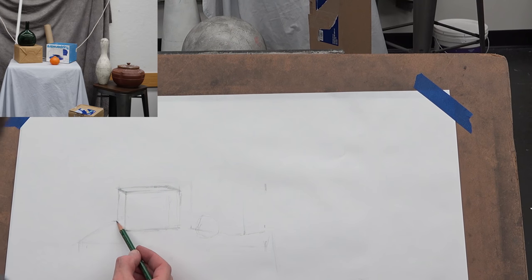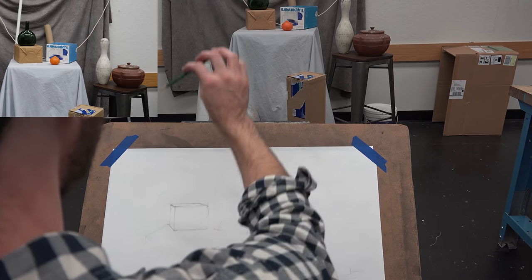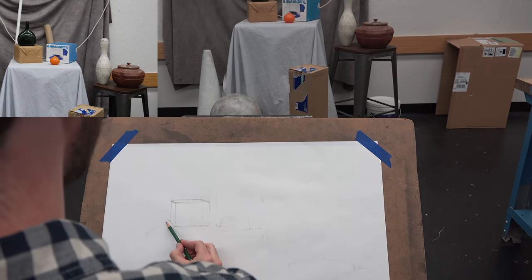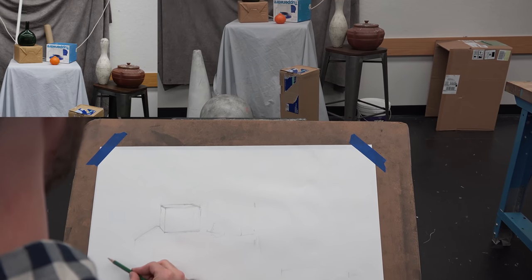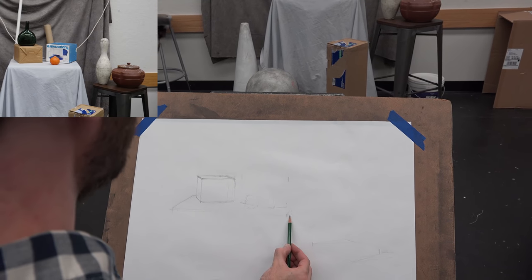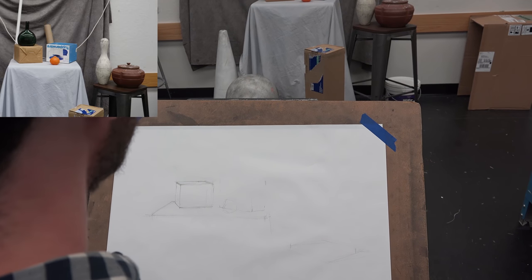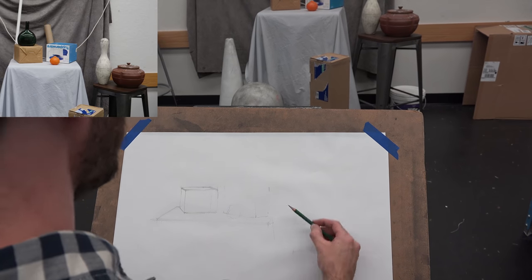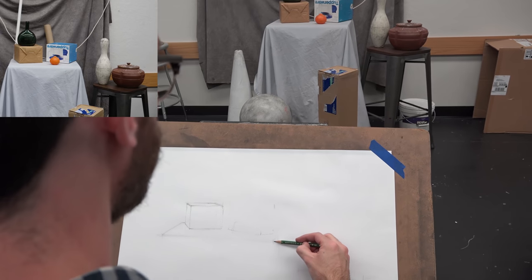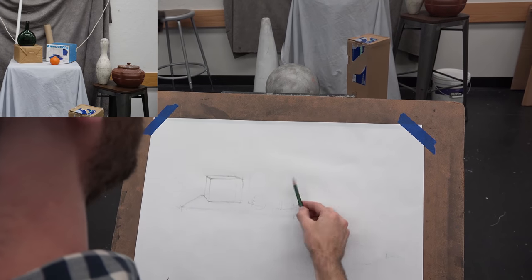The first couple times you try this out, it's going to feel unnatural. It feels like you're slowing yourself down a lot if you're used to speeding through a drawing at this stage — that's pretty normal. You have to trust the process a little bit and hope that in the end it's helping you with accuracy. I'm just going to start to block out a few of these other shapes, checking my angles as I go.